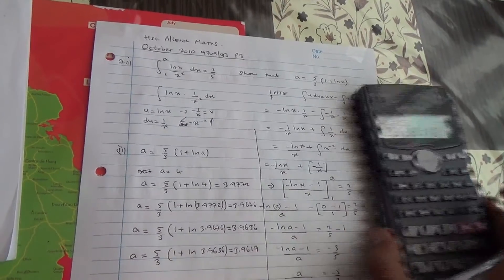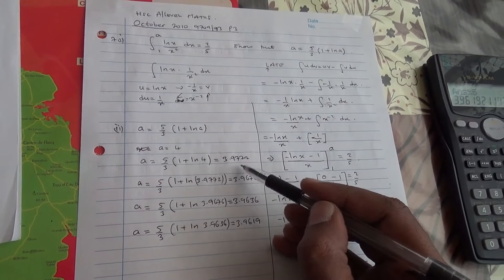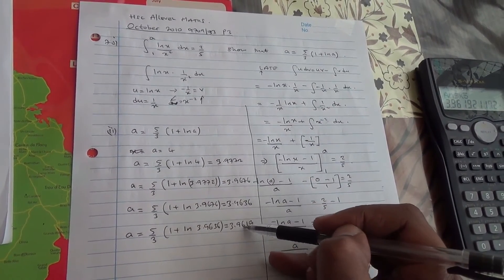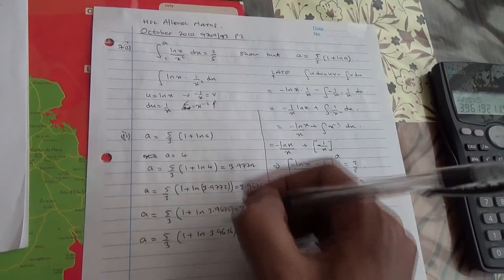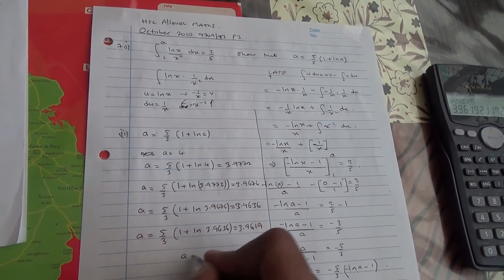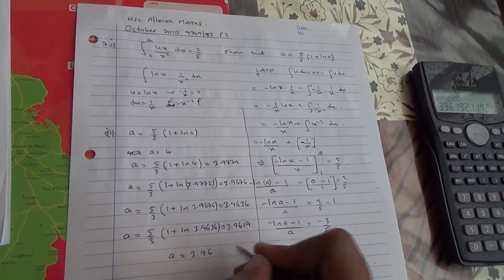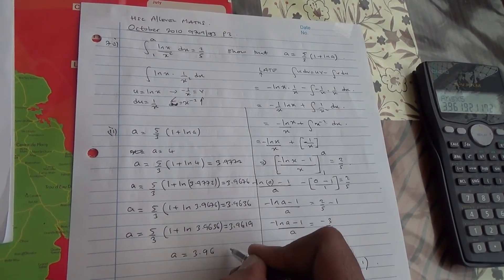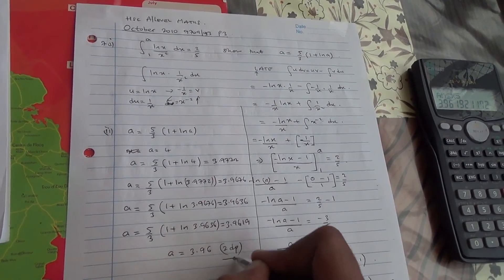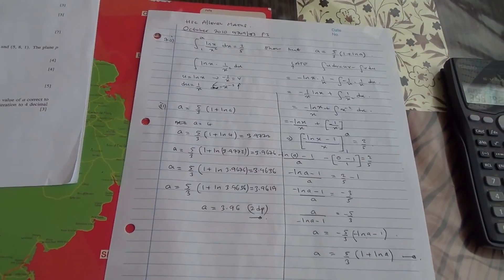We can observe that this is converging to one value: 3.96, 3.96, 3.96. With these four iterations it is sufficient to say that a is approximately 3.96 to 2 decimal places, as required by the question.